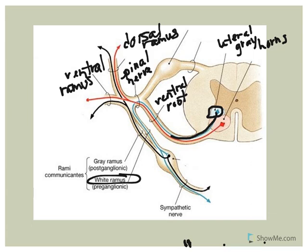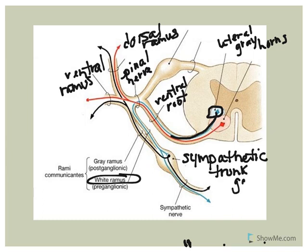The pre-ganglionic nerve fibers have one of three options of where they're going to synapse with a cell body of a post-ganglionic neuron. One of the options is what we refer to as a sympathetic trunk ganglion, which has cell bodies of post-ganglionic neurons.